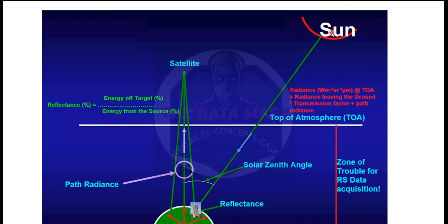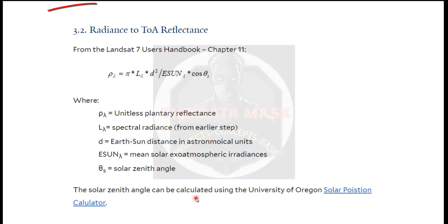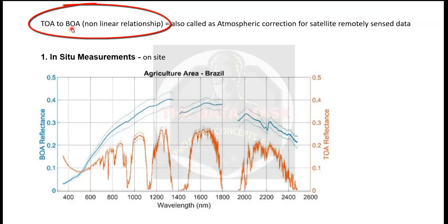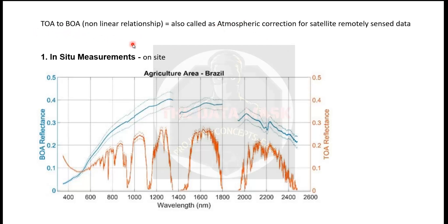We have to fix the solar zenith angle — the position of the sun. We have to fix by what look angle we are observing the building. We also need to fix some environmental conditions that will remain almost constant. Now let us convert top of the atmosphere to bottom of the atmosphere. The relationship from top of the atmospheric reflectance to bottom of the atmospheric reflectance is not a linear relationship, so things are a little complicated. The conversion of top of the atmosphere to bottom of the atmosphere is also known as atmospheric correction of satellite data, because the only difference is the atmosphere added into the reflectance.